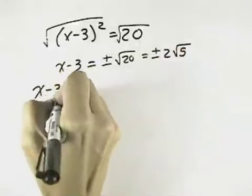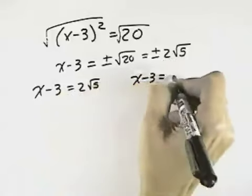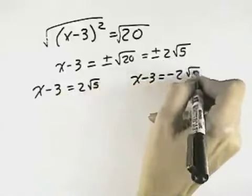So that means one of our equations is x minus 3 equals 2 times the square root of 5, and one of our equations is x minus 3 equals negative 2 times the square root of 5.